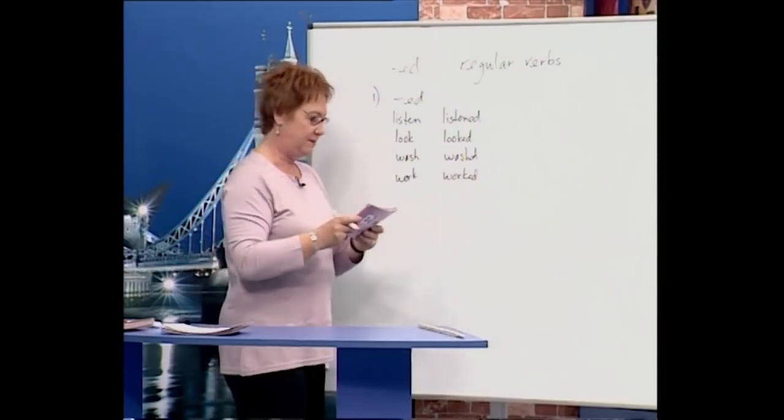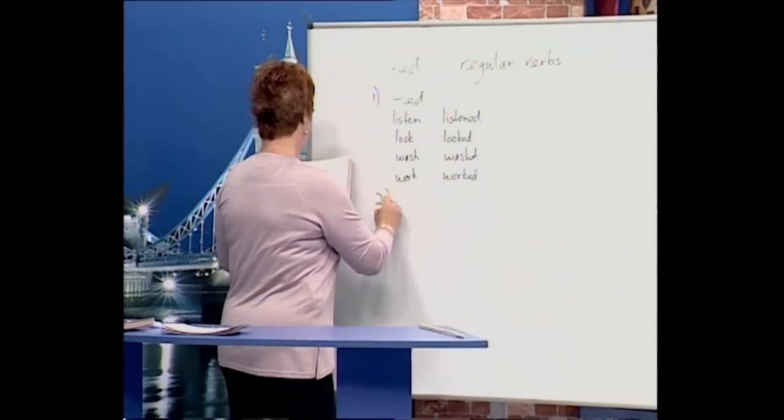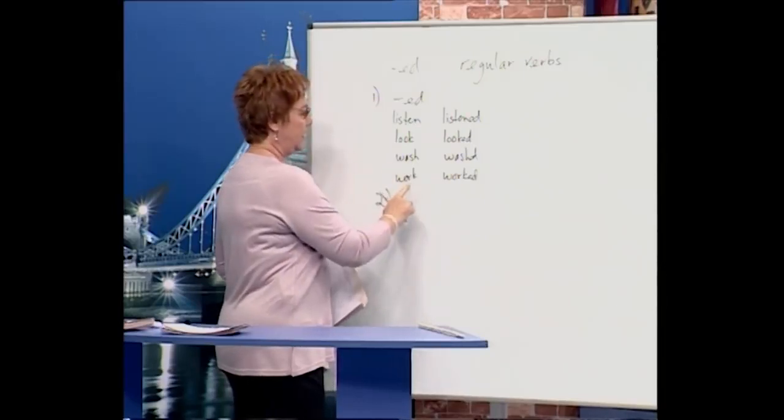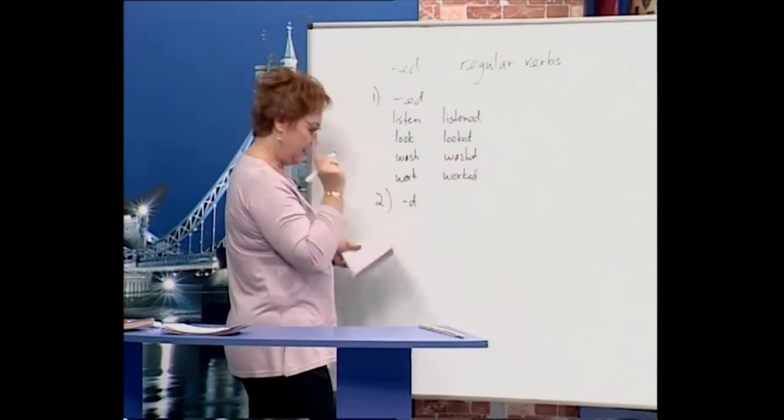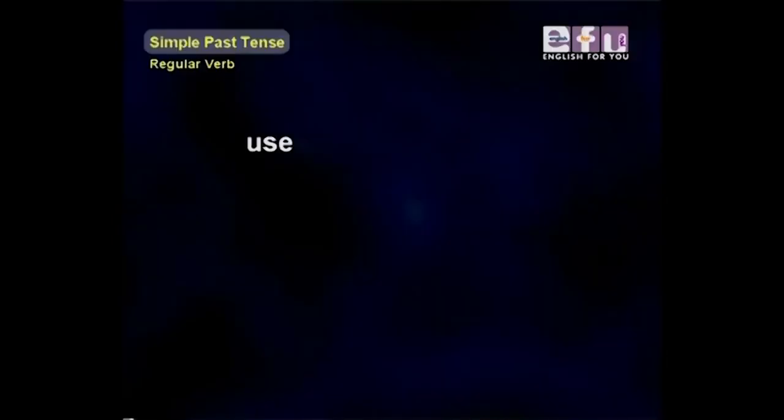Now the second group for spelling is if there is already an 'e', we only add 'd'. Here are some examples: use, there's already an 'e' so we just say 'used', only 'd'; like, there's already an 'e', 'liked'; and live, there's already an 'e', 'lived'.